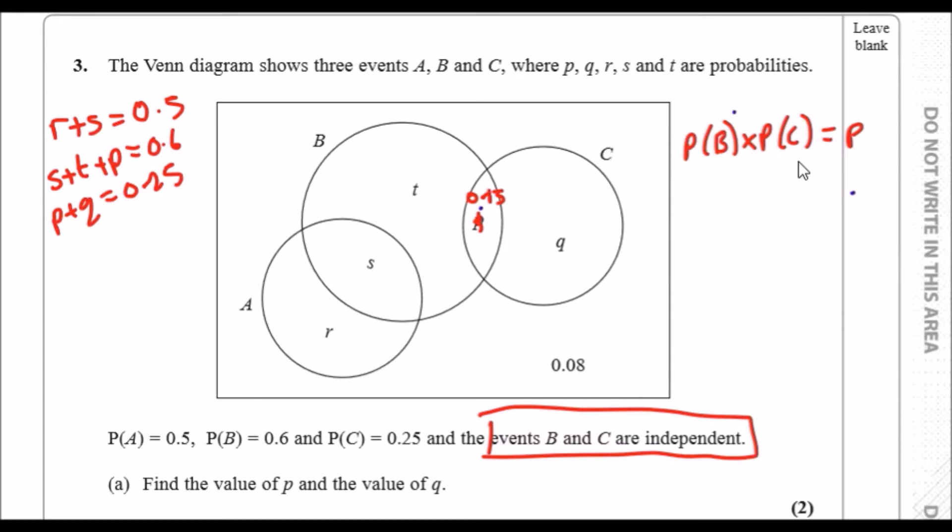Now since we've got 0.15, we can work out q because the whole of C must be 0.25. We have 15, there's obviously 10 left over, so 0.10. That's good.